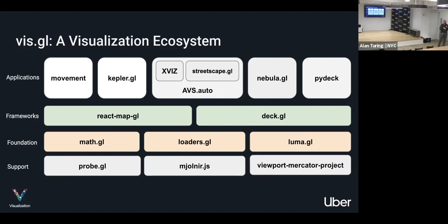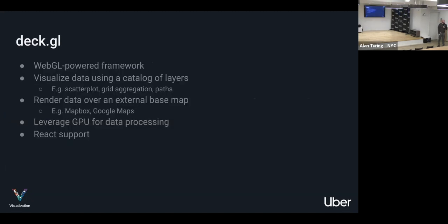Luma GL is the main thing I work on — our core 3D rendering tech. Then there are a bunch of small support libraries: probe.gl for debugging and tooling, mjolnir for input handling, and viewport-mercator-project for map projection. That web Mercator projection is the standard for web mapping technologies — what Google Maps and Mapbox use — so we have that math bundled in its own library.